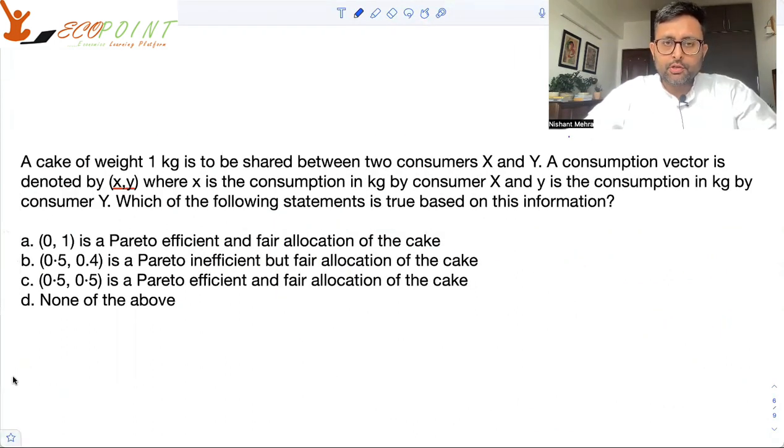Let's have a look at this question. Read the question and try to do it yourself first. A cake of weight one kilogram is to be shared between two consumers X and Y. They are asking about Pareto efficient and fair allocation. A fair allocation is one which is both Pareto efficient and envy free. Envy free is that I do not envy what you have and you do not envy what I have.